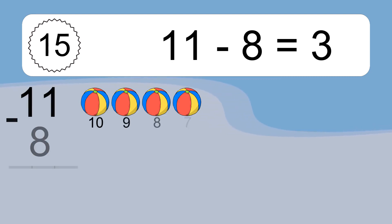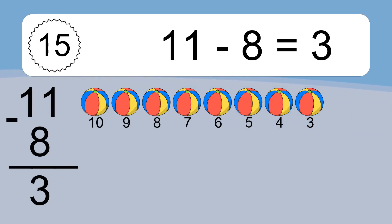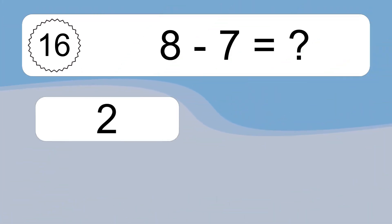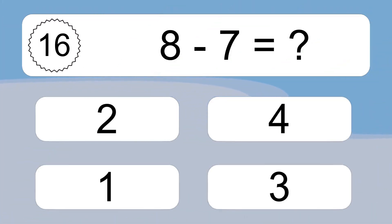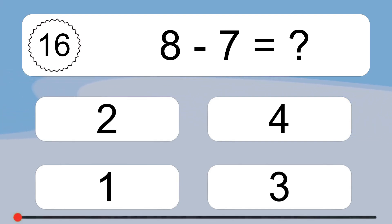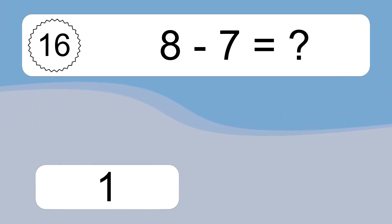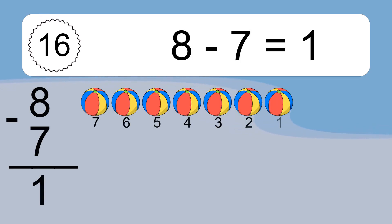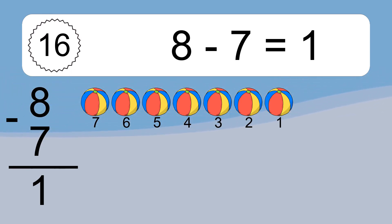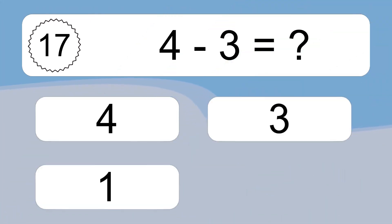11 minus 8 equals 3. Let's count it: 10, 9, 8, 7, 6, 5, 4, 3. 8 minus 7 equals what? 8 minus 7 equals 1. Let's count it: 7, 6, 5, 4, 3, 2, 1.